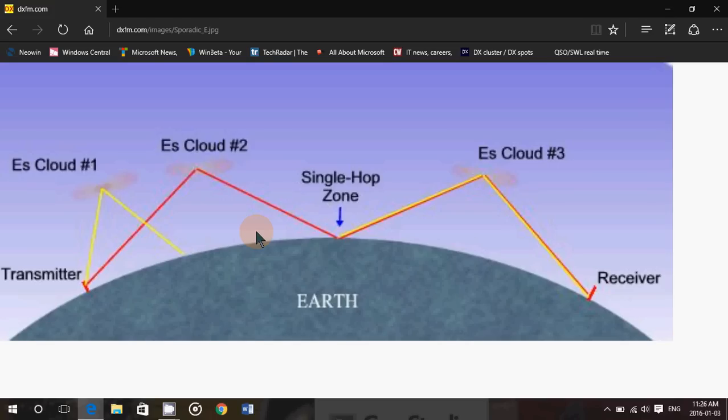This is a very unique propagation mode. And it happens at random, you can have Sporadic eSkip for no reason or no known reason. And a Sporadic eSkip cloud can propagate anything from a few hundred miles or kilometers to more than 1,000 or 2,000 kilometers or miles away.